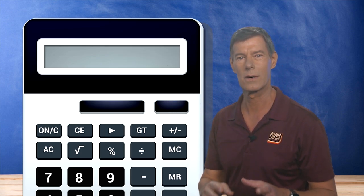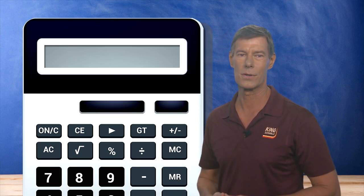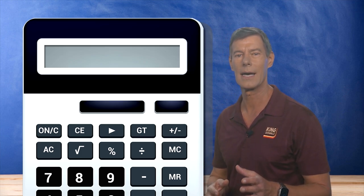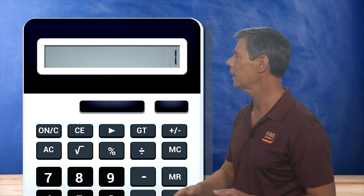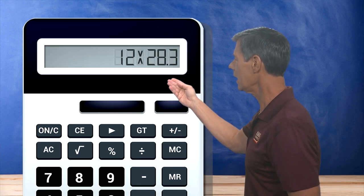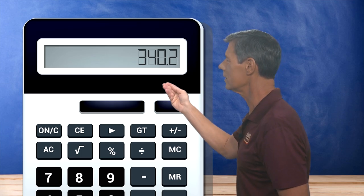Now next, to convert ounces to grams, you just multiply the number of ounces by 28.35. For example, if we need to find out how many grams is in 12 ounces, we would multiply 12 by 28.35 to get about 340.2 grams.